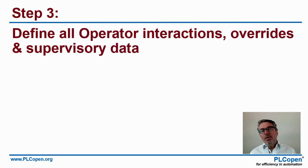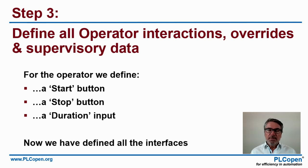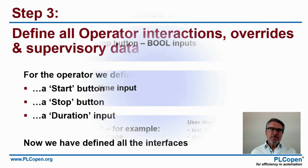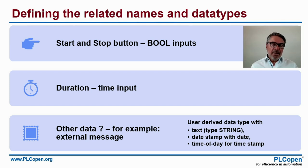Step three: define all operator interactions — override and supervisory data. We define a simple operator interface with a start button, a stop button, and a duration input to know how long the process will take. Now we have defined all the interfaces with their names and data types: start and stop are bool, duration is a time type, and for messages we could use a string type with date stamps to know when something happens.